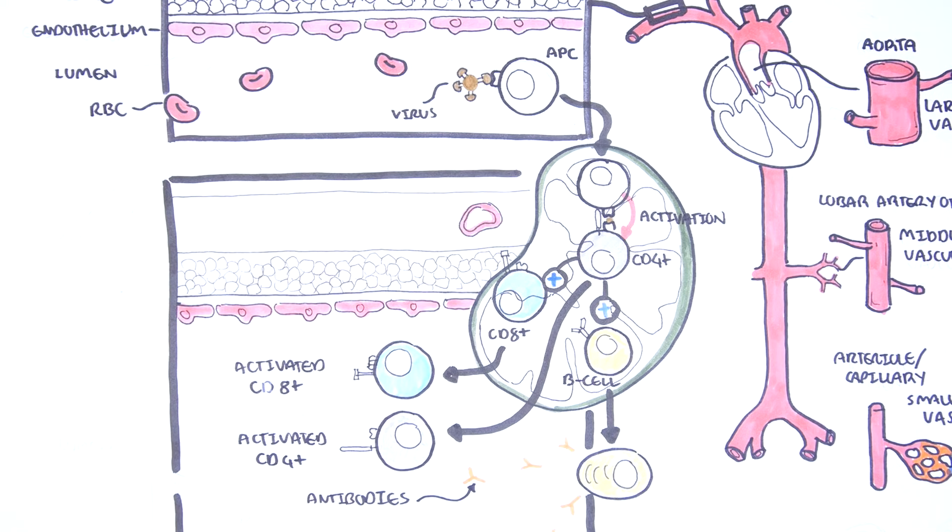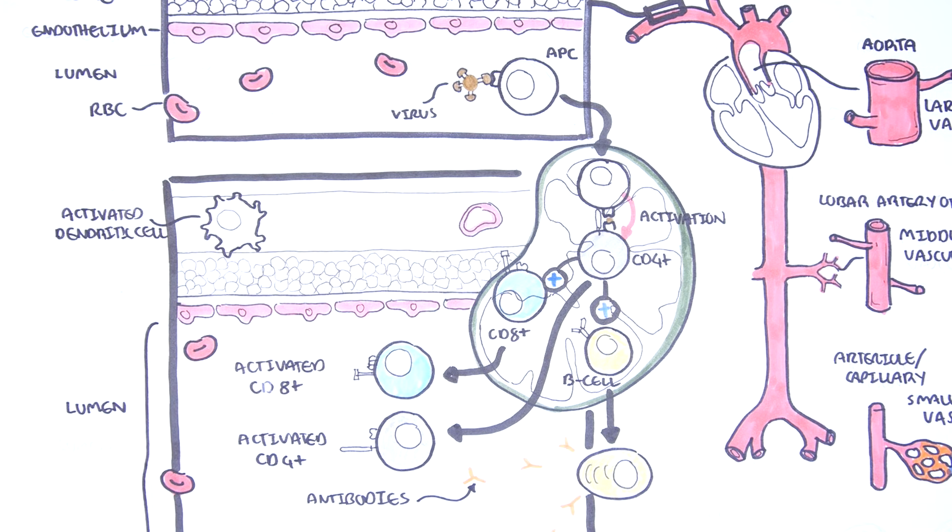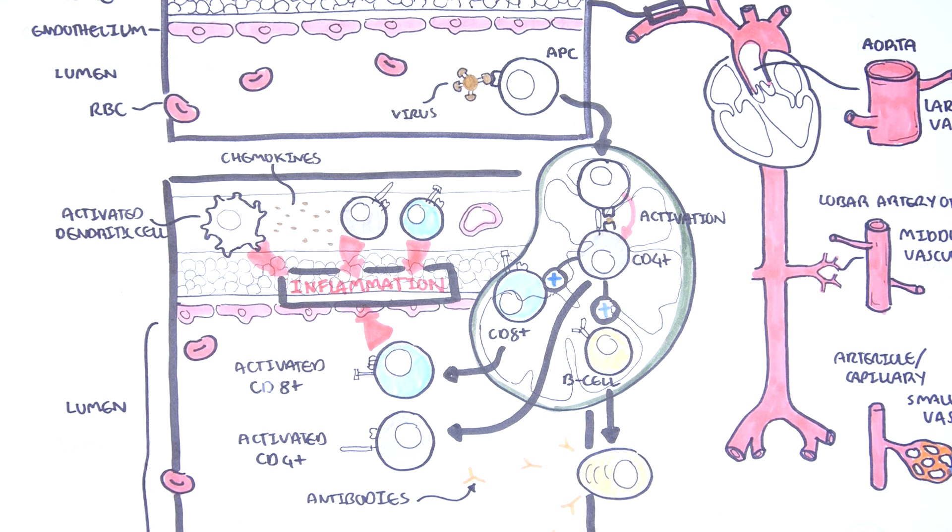Another possibility to consider is that if dendritic cells in the adventitia are activated they can also begin releasing chemokines, a chemical attractant for immune cells including CD8 and CD4 T lymphocytes. This will mount an immune response from the deeper layers of the blood vessel first and can potentially result in chronic changes and granulomatous changes seen in some types of vasculitis such as giant cell arteritis, Takayasu arteritis, and antineutrophilic cytoplasmic antibody associated vasculitis.